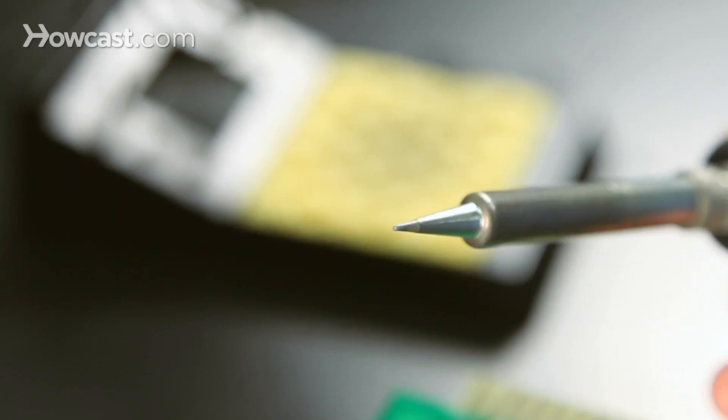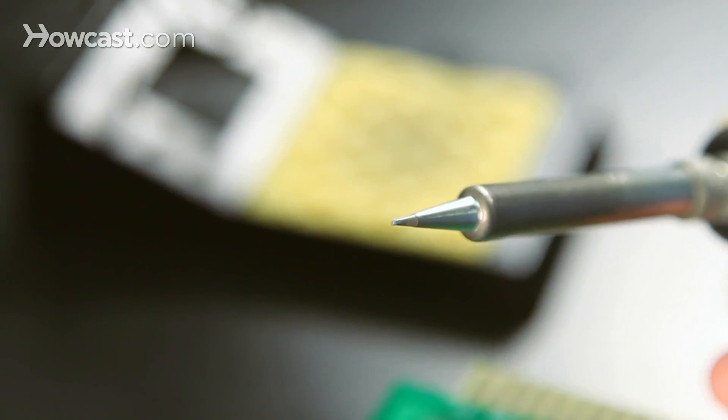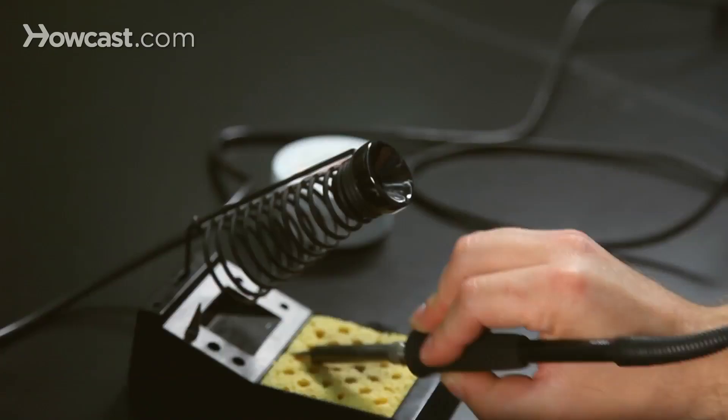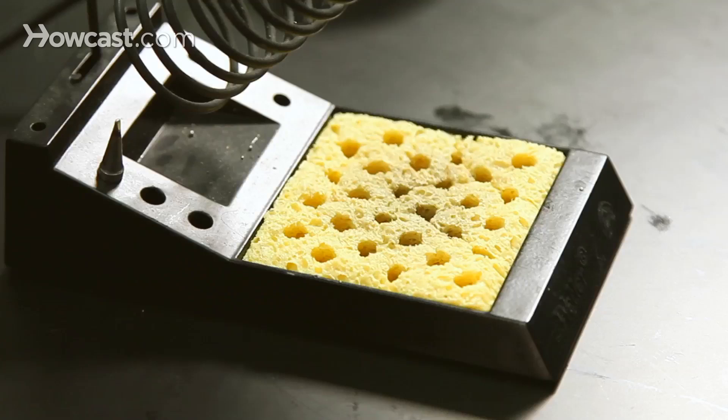You can see that the tip doesn't look as shiny as it did right before soldering, and the reason is that oxide is forming. So what we need to do is remove that oxide by wiping it on a sponge, a wet sponge.